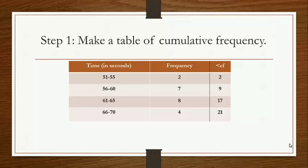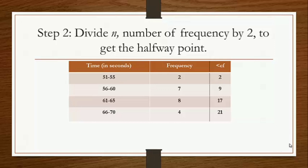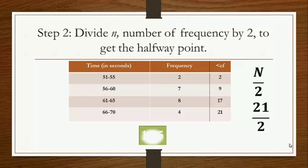Continuing the cumulative frequency: adding 8, we have 17; adding 4, we have 21. The second step is to divide n by 2 to get the halfway point. Our n is equal to 21, divided by 2, giving a halfway point of 10.5.